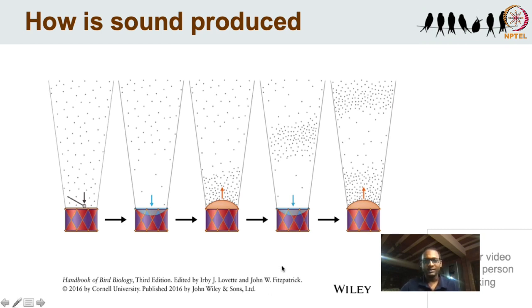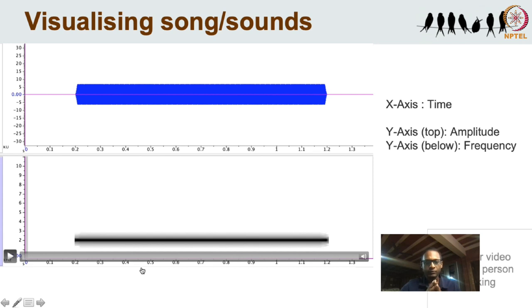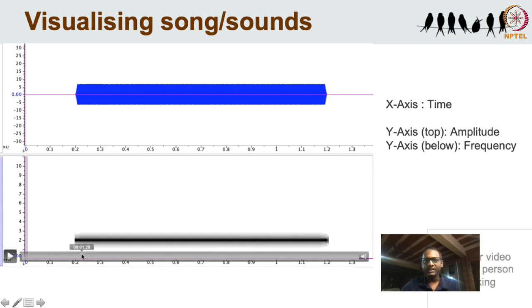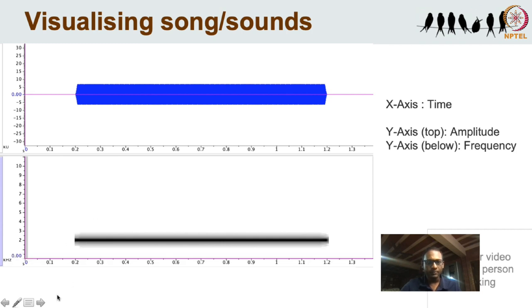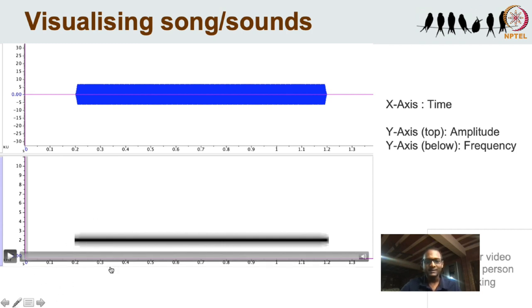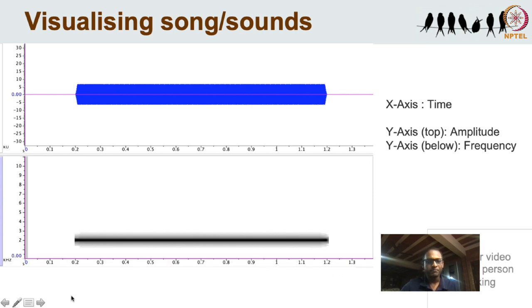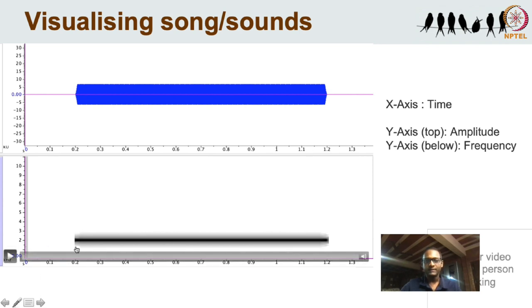This is a simple illustration of this fairly complex mechanism. For visualizing songs and sounds in academic research, we represent them using two kinds of figures. At the bottom you see one where the x-axis has time — this song is about 1 to 1.3 seconds, so it's really short — and on the y-axis is kilohertz, which is the frequency. This song is produced at about two kilohertz.